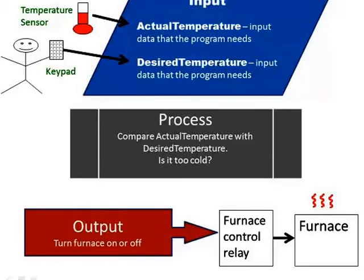It's going to compare actual temperature with desired temperature, and actually ask the question, is it too cold? Really, what it's doing is asking, is actual temperature less than desired temperature? But, we can say in plain English, is it too cold? And then it makes a decision on what to do, and then it does it, and that's the output stage. It turns the furnace on or off.